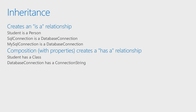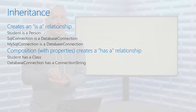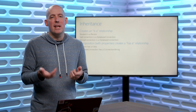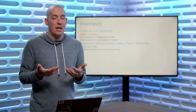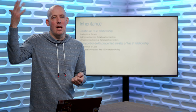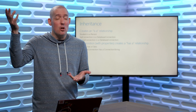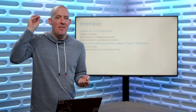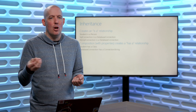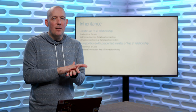Bringing this down into a more programming-oriented construct, we've got SQL connection and MySQL connection. In both of those cases, those could be types of database connection. The great part about creating a generalization-specialization relationship is that I can count on the generalized code — things like talking to the network — all being in that general class, and then add on whatever specialization code I might need.